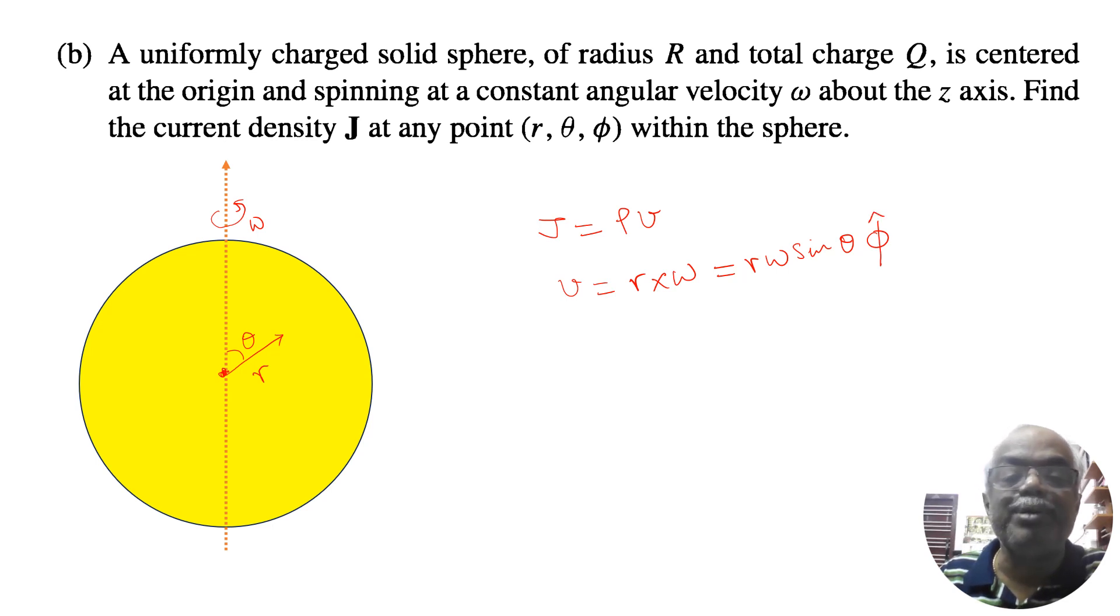We are asked to find the point r, θ, φ. So r and θ is perpendicular naturally. All three are perpendicular to φ hat. So the direction is φ hat. Now you substitute v here. So J will become, J is equal to ρ multiplied by r omega sin θ φ hat.